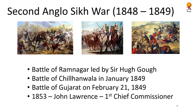The Second Anglo-Sikh War was a result of replacing Mulraj as the governor of Multan. Shere Singh was sent to handle it but he also joined Mulraj's side, which meant Lord Dalhousie travelled from Bengal to suppress this revolt. Three specific battles were fought: the Battle of Ramnagar led by Sir Hugh, the Battle of Chillianwala in January 1849, and the Battle of Gujarat on February 21, 1849. In 1849, Shere Singh surrendered and Punjab was annexed. In 1853, John Lawrence became the first Chief Commissioner of Punjab.